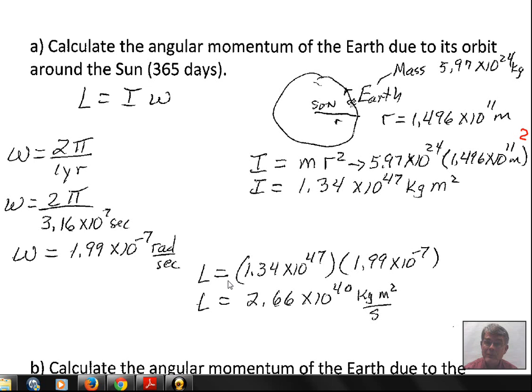So angular momentum. We have a value for the rotational inertia, 1.34 times 10 to the 47th kilograms meter squared in standard metric units. The omega, 1.99 times 10 to the minus 7th in standard units, radians per second. Multiplying those together, we come up with 2.66 times 10 to the 40th kilograms meter squared per second. So we've discovered the angular momentum when we're in orbit as the Earth is moving around as a point around the Sun.